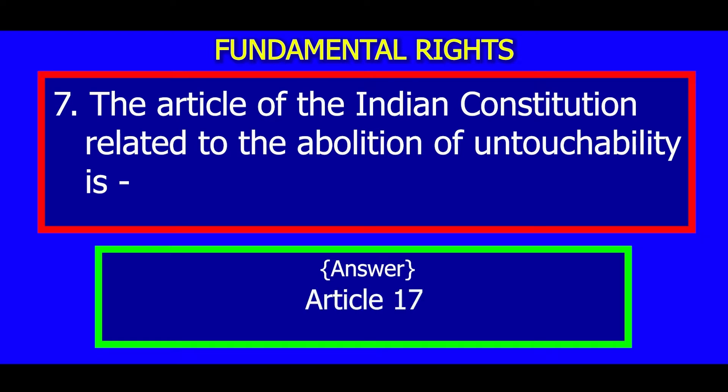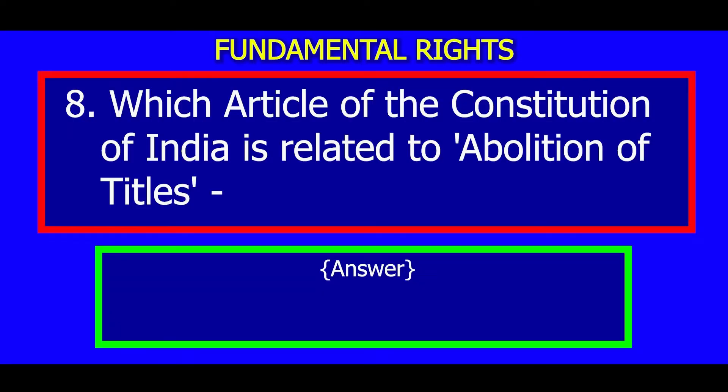Number 7: The article of the Indian Constitution related to the abolition of untouchability is which article? Answer: Article 17. Number 8: Which article of the Constitution of India is related to the protection of certain rights regarding freedom of speech?